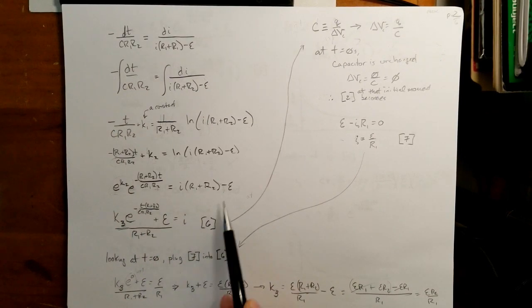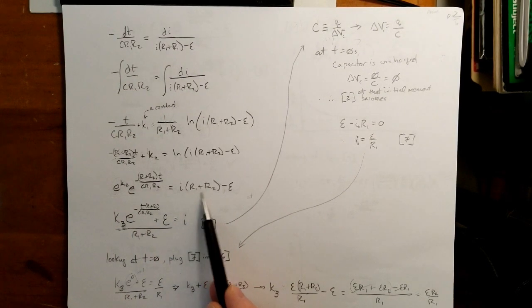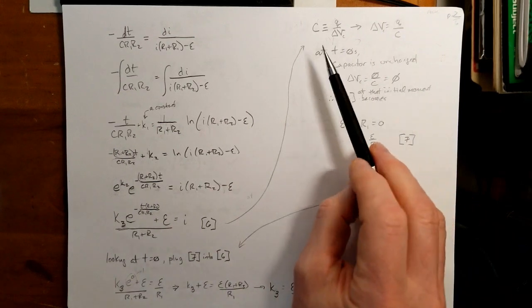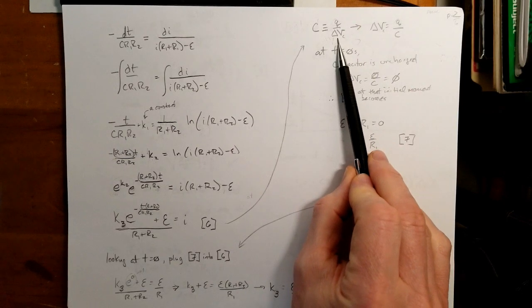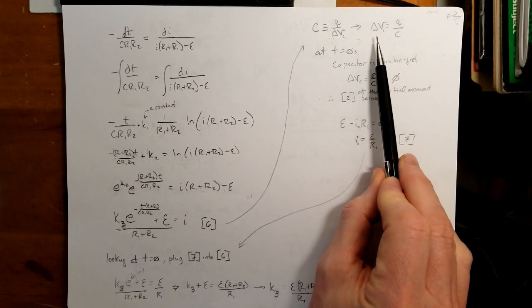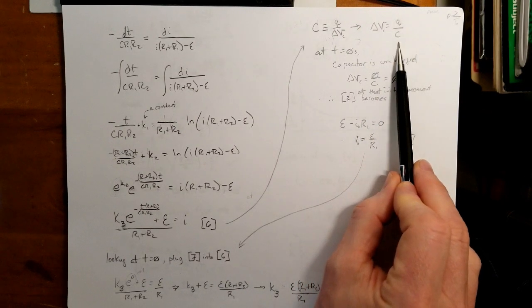I can now solve for I by adding epsilon to both sides and then dividing by R1 plus R2. And I end up with this equation here. I know that my capacitance is Q over delta Vc. And so delta Vc is equal to Q over C.